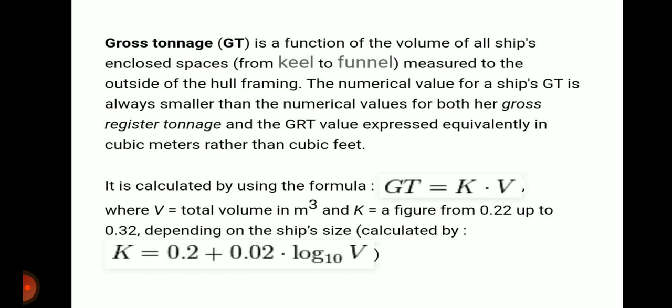Gross tonnage is a function of the volume of the ship - all the enclosed space from the keel to funnel, from top to bottom, measured from the outside of the hull framing. It is the volume of all enclosed space from keel to funnel, measured from the hull's outside covering.